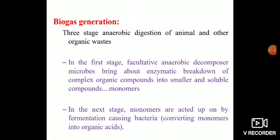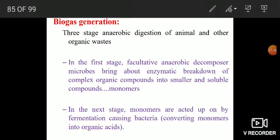Now the biogas generation. How does biogas generation occur? It is actually a three-stage anaerobic digestion of animal and other organic wastes. In the first stage, some facultative anaerobic decomposer microbes bring about enzymatic breakdown of complex organic compounds into smaller and soluble compounds. These smaller and soluble compounds are known as monomers. You can say the polymers are being converted to monomers with the help of facultative anaerobic decomposer microbes.